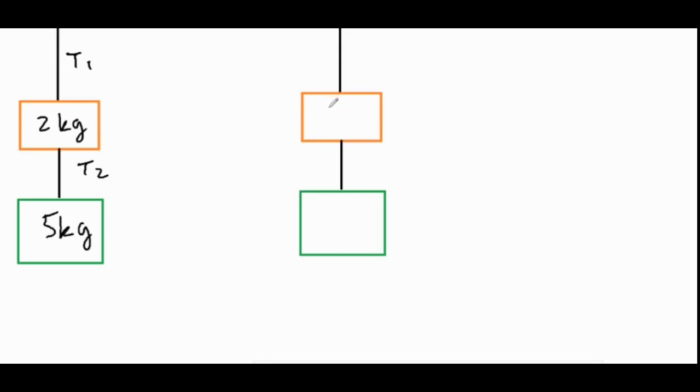And then secondly, we're going to do a slightly more complicated version where we have two masses m1 and m2, and then we're going to solve for T1 in terms of those two masses. For the first one, the first thing we want to do is always draw a force diagram. If we're focusing on our orange mass of 2 kilograms, we have the force of tension pulling up which we called T1 a little bit earlier.